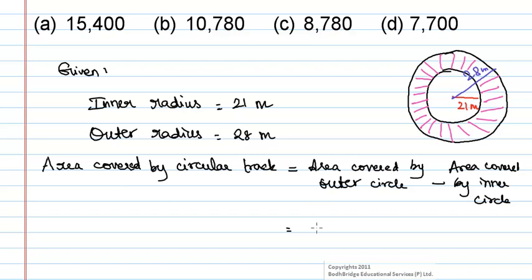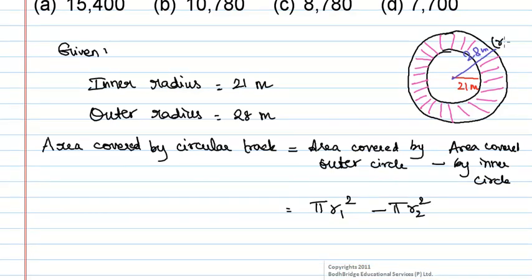We know that area of circle is equal to pi r square, i.e., pi r1 square minus pi r2 square. Here r1 represents the radius of outer circle and r2 represents the radius of inner circle.